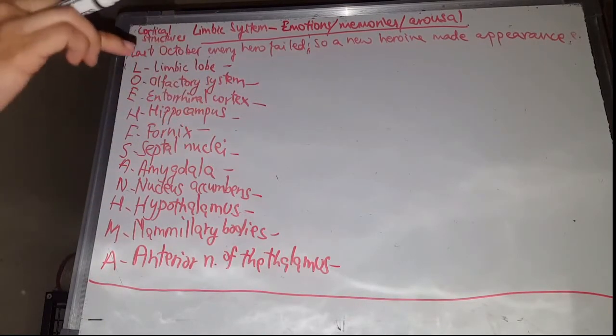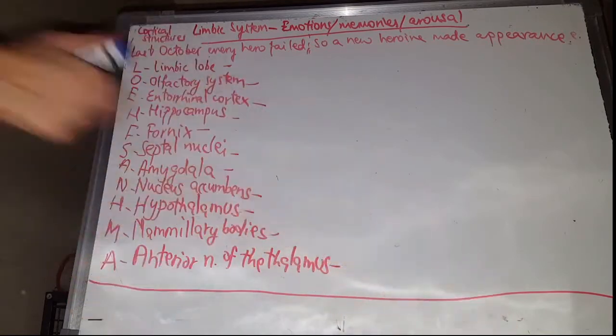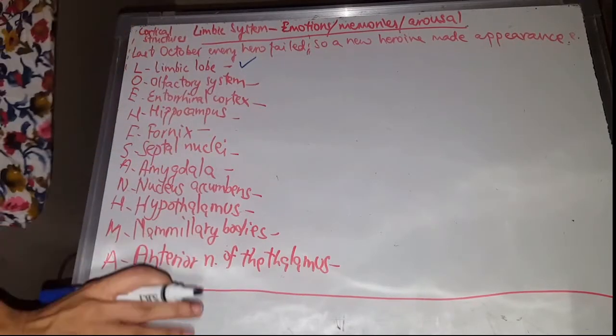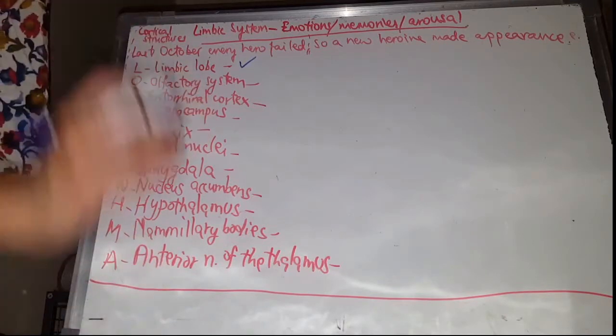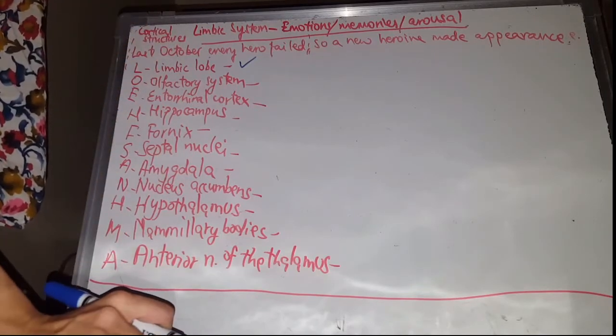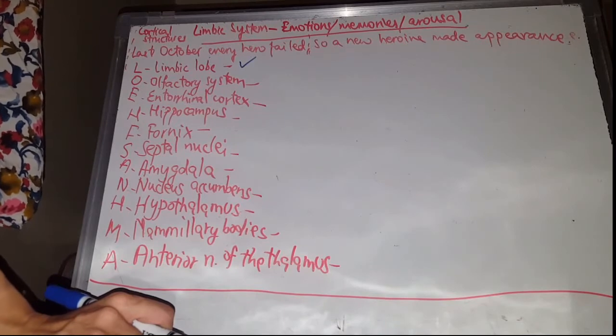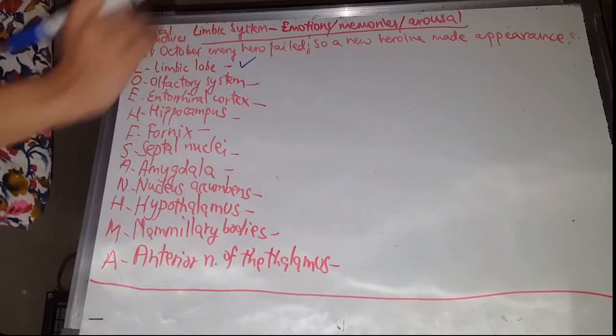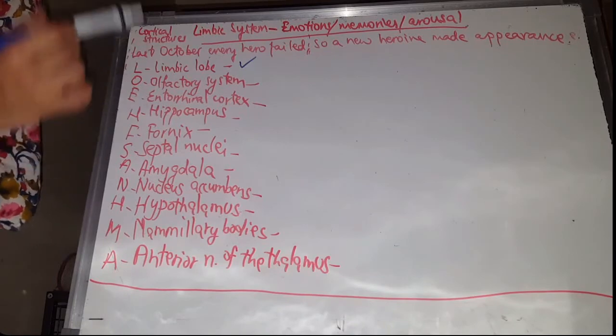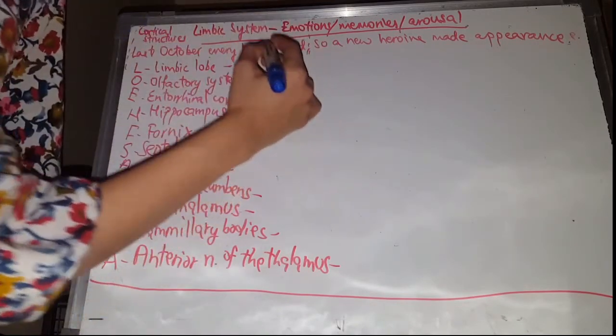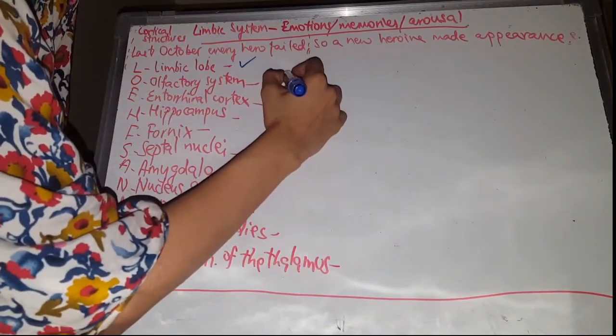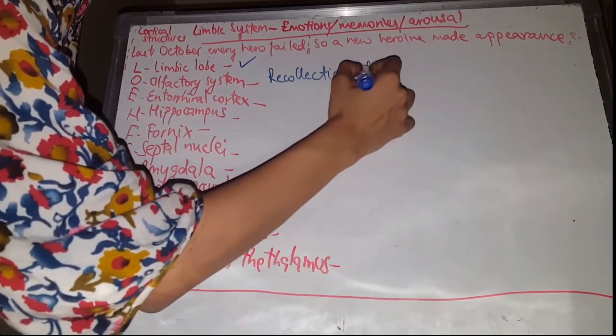Now let's move on to the functions of each structure. The limbic lobe, if you have watched my last video, you'll know the function of the limbic lobe. If not, please hop onto my last video. The mnemonic for that one was 'can good people's prayer destroy fate's coming rage?' The olfactory system is closely connected to the amygdala and the hippocampus, and it's for the recollection of odours.